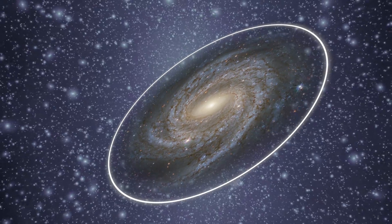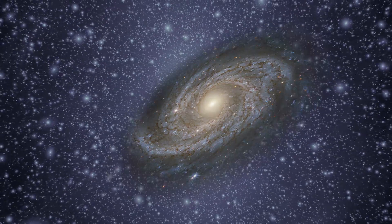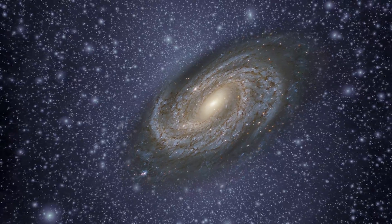Even accounting for the mass from all the planets, dust, gas and stars in the galaxies, the rotation is still way too fast. The natural conclusion is that there is some invisible matter accounting for the extra-gravitational pull. We call this dark matter.